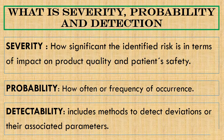The next concept is probability. Probability means how often, or the frequency of occurrence, is identified for the identified risk. If the frequency of occurrence is more, then the risk will be considered as a probable risk. The next concept is detectability, which includes methods to detect deviations or their associated parameters.